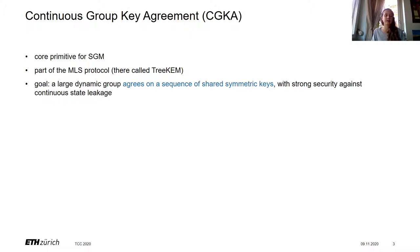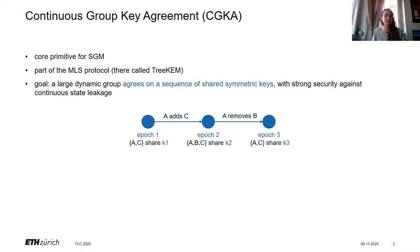In a sense, CGKA is for SGM what key exchange is for TLS. CGKA enables a group of users to agree on a sequence of shared symmetric keys. Think of CGKA as creating a bunch of epochs where in each epoch a fixed set of group members shares a symmetric key, which they can use to encrypt messages to the group.